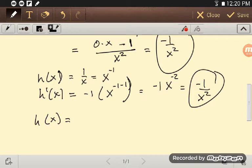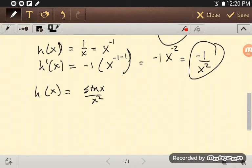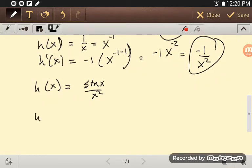So, I've got the quotient rule. If I have, say, sine of x over x squared, I just identify the top, I identify the bottom, and I plug things in.